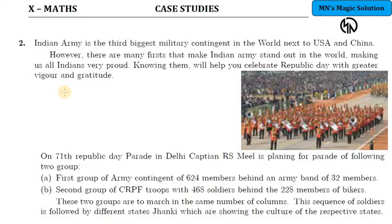In question number two, they have given some Republic Day parade. In the parade, there are two groups of people. First group, it is an army contingent of 624 members behind an army band of 32 members.